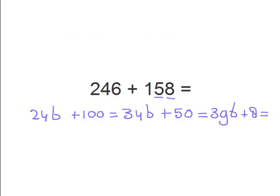And now we just need the 8. But we can also split up the 8 into a 4 and a 4 to make it even easier. So then we have 396 plus 4 is 400, and then plus 4 again is 404.